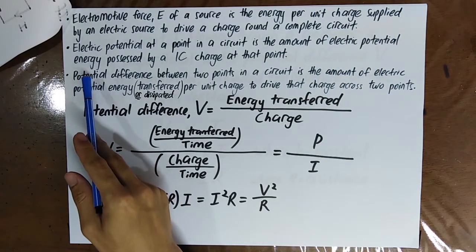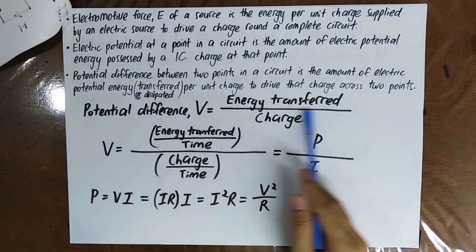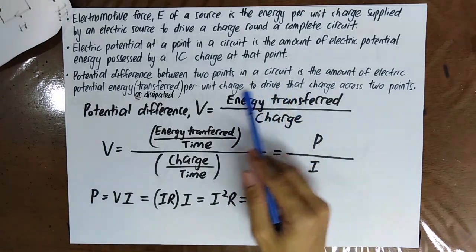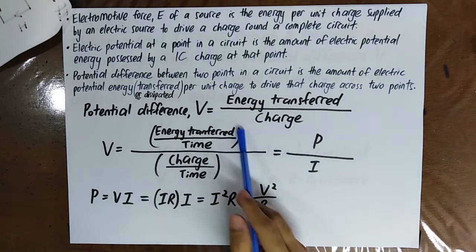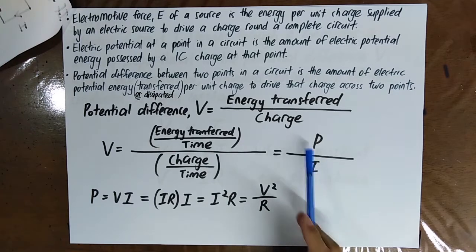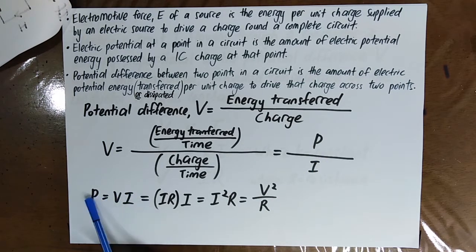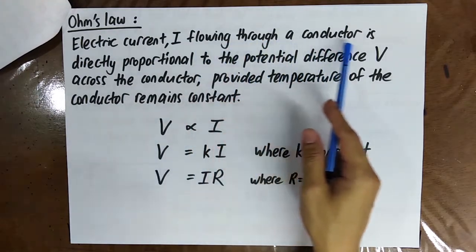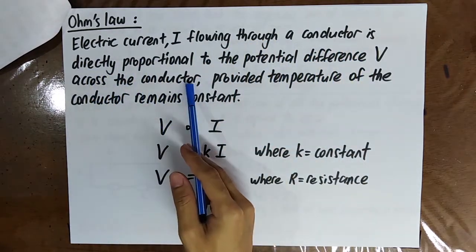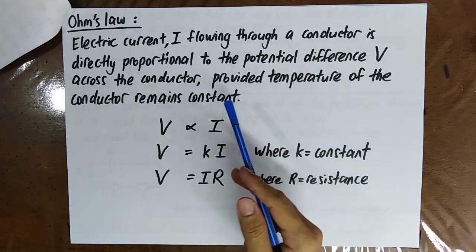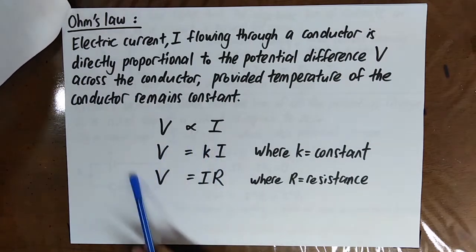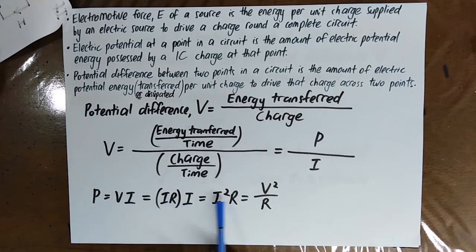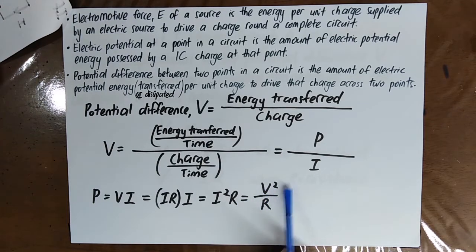From the definition of potential difference, you know that potential difference equals energy transfer divided by charge. When you differentiate with respect to time, you get power on one side and current on the other. Therefore, power equals voltage times current: P equals VI. Recalling Ohm's law — the current through a conductor is directly proportional to the potential difference across it provided temperature remains constant — V equals IR, where R is resistance. By substituting, power also equals I squared R, which equals V squared over R.